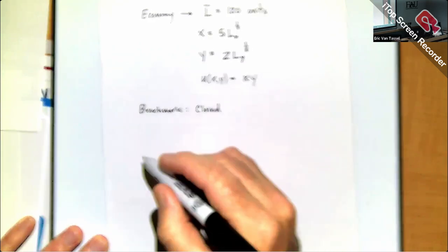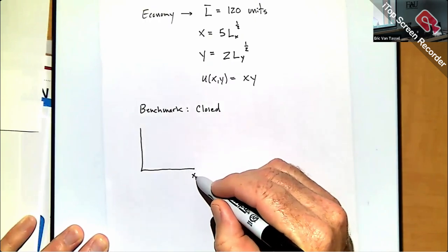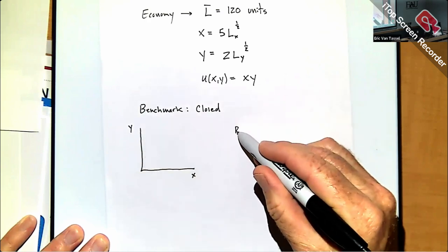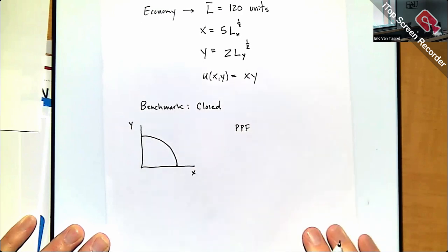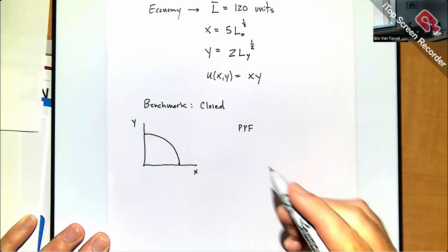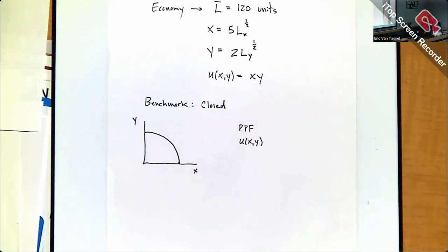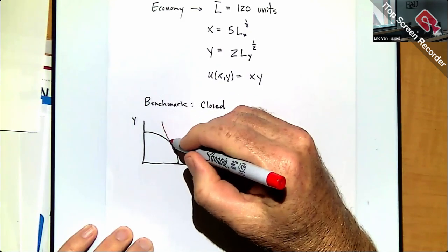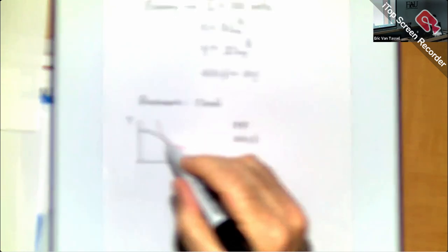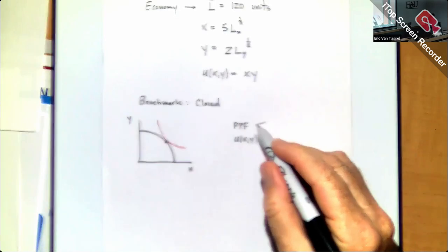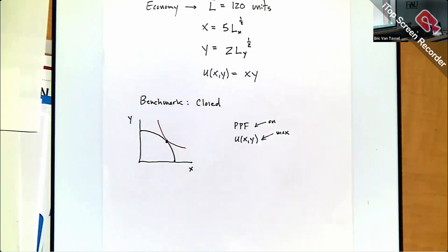For the closed economy, I'll generate a nonlinear PPF and graph in the Cobb-Douglas utility function as an indifference curve. The basket we're hunting for is on the PPF, maximizing the utility function. The optimization problem is: maximize the utility function subject to being on the PPF.